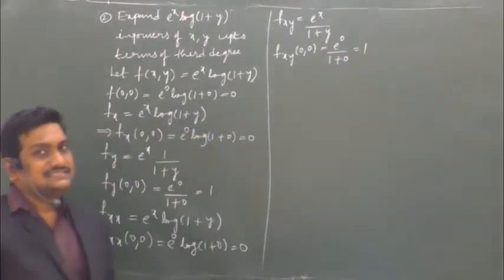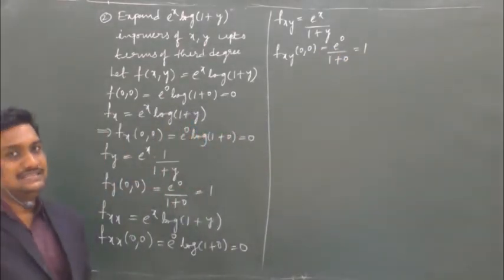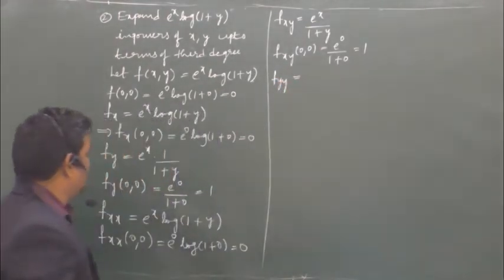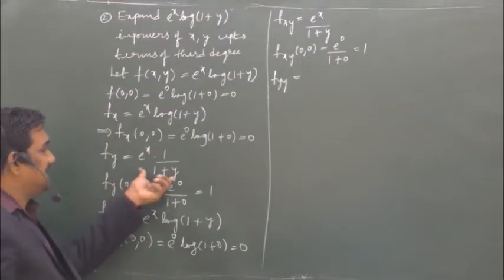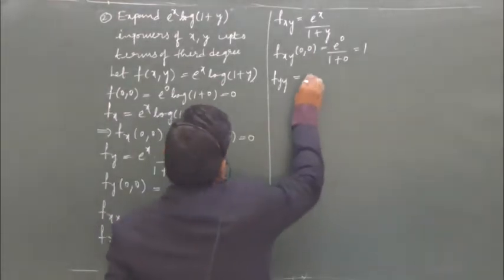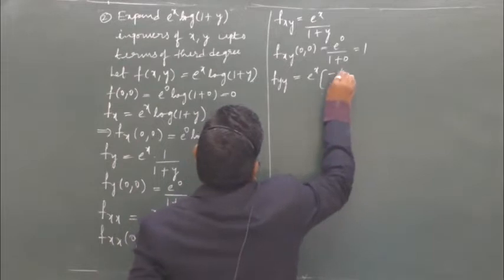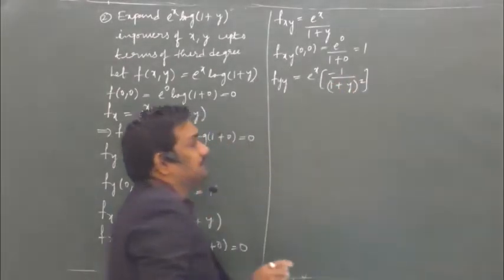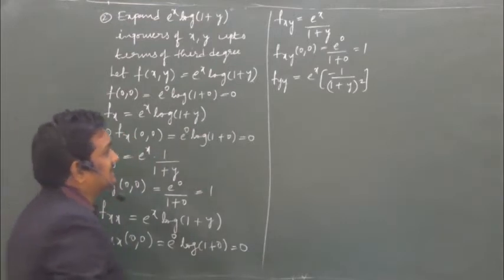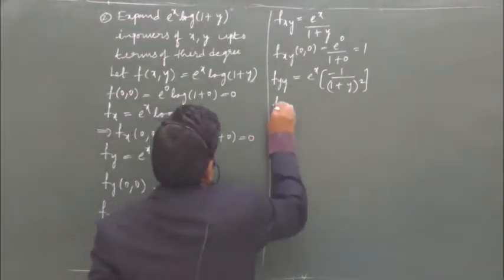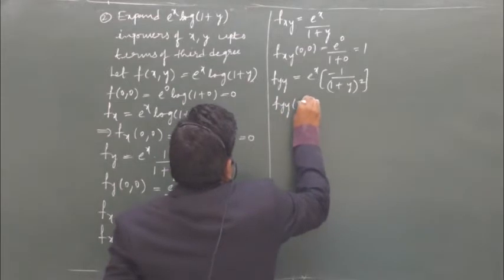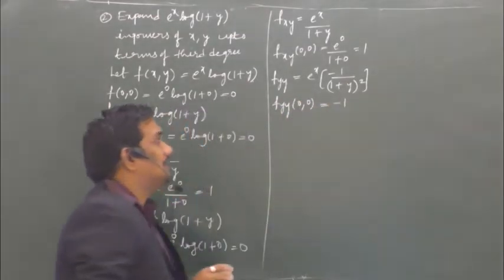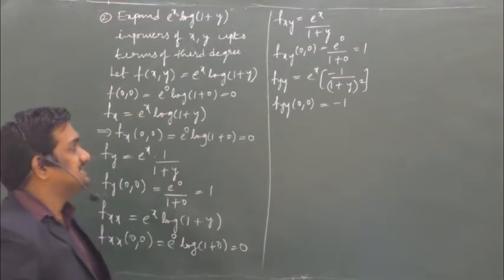The next term involves y² · fyy at (0,0). Now fyy is the derivative of fy with respect to y. It is e^x · derivative of 1/(1+y), which gives -e^x/(1+y)². Evaluating at (0,0): -1/(1)² = -1.